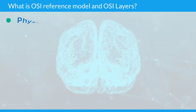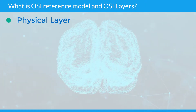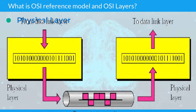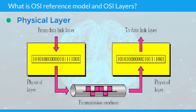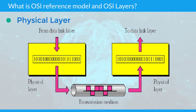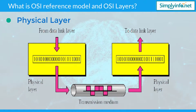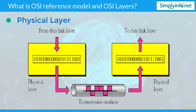Physical layer: This layer conveys the bit stream through the network at the electrical, optical, or radio level. It provides the hardware means of sending and receiving data on a carrier network.